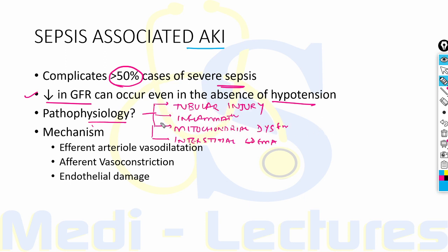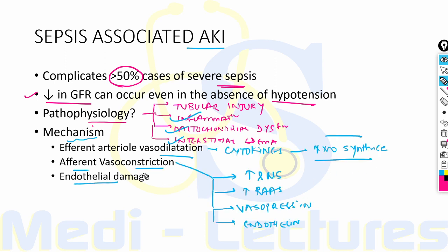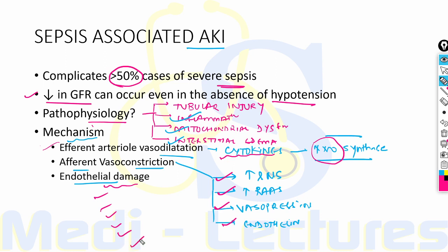Sepsis can lead to AKI by tubular injury, inflammation, mitochondrial dysfunction, and interstitial edema. The mechanism involves efferent arteriolar vasodilation due to cytokine release increasing nitric oxide synthase leading to vasodilation; efferent vasoconstriction due to increased sympathetic activation, RAS activity, vasopressin, and endothelin; and endothelial damage from increased leukocyte adhesion and migration, thrombosis, increased permeability, interstitial pressure, decreased local flow, and activation of reactive oxygen species — all leading to damage to renal tubular cells.